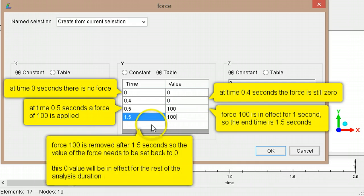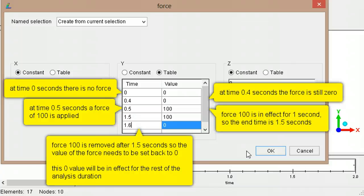At 1.6 seconds there is no load, so a zero force is specified. For the remainder duration of the analysis, the last force value that was specified will continue to remain in effect, which in this case is zero.